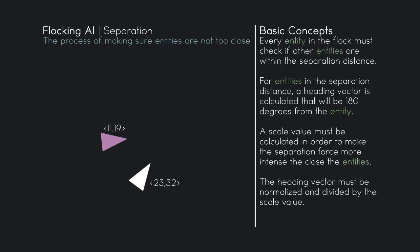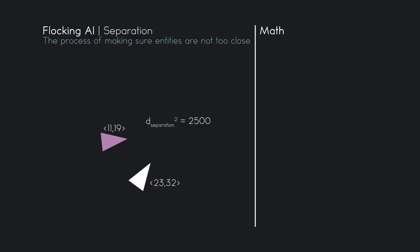Let's say our separation distance squared is 2500. We test using squared distances because we don't need the absolute distance — we just need to compare two values. Square root is very CPU intensive, so we save CPU cycles by dealing with squares. So the separation distance squared is 2500.